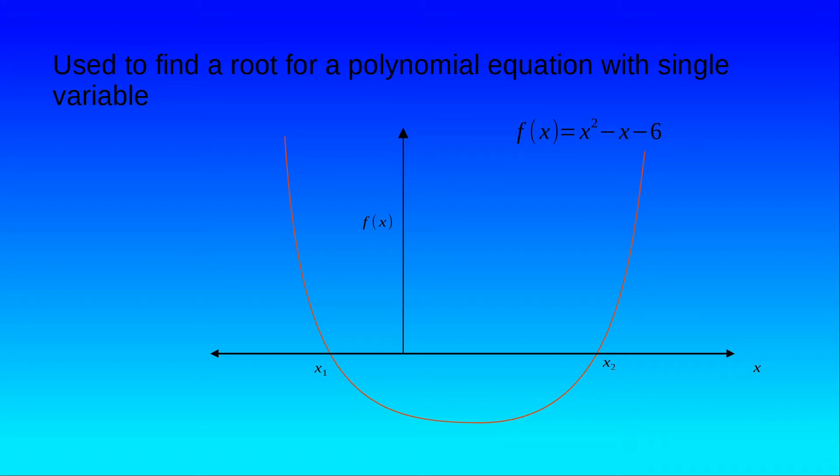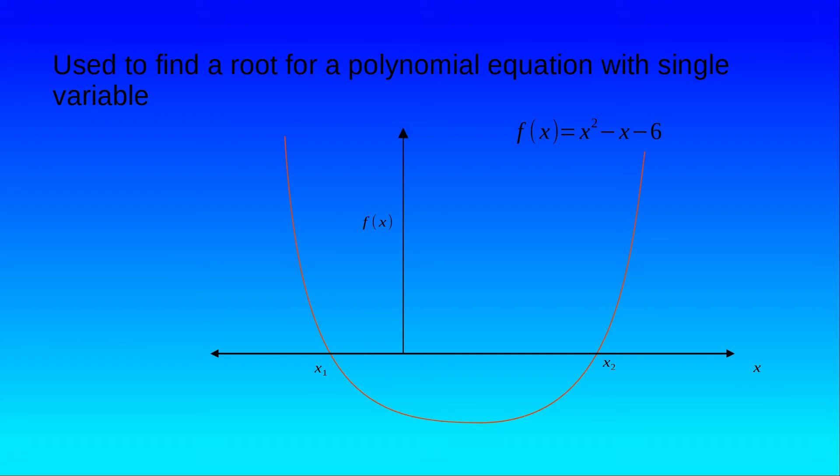So how do we solve it using successive substitution method? Let's proceed. We can rewrite the equation from the previous slide, f(x) = x² - x - 6, as f(x) = x. We can take x on the left-hand side, that is x² on the LHS, and write it as x² = x + 6, or x = √(x + 6).